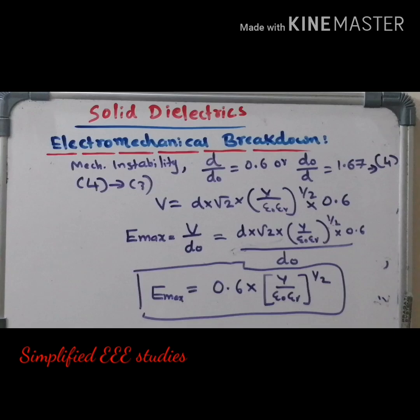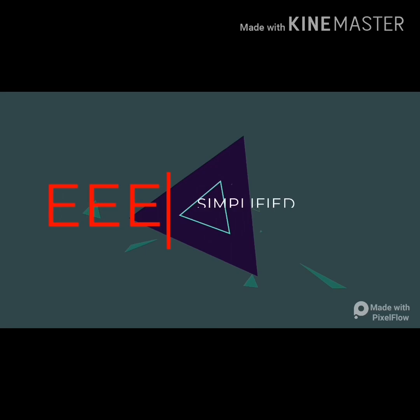This is the final expression: E_max = 0.6 · √(Y / (ε₀·εᵣ)). That is the maximum value of electric stress before the dielectric breakdown occurs — the stress required to cause dielectric breakdown according to electromechanical breakdown theory. This is the way how electromechanical breakdown normally takes place in solid dielectric material.